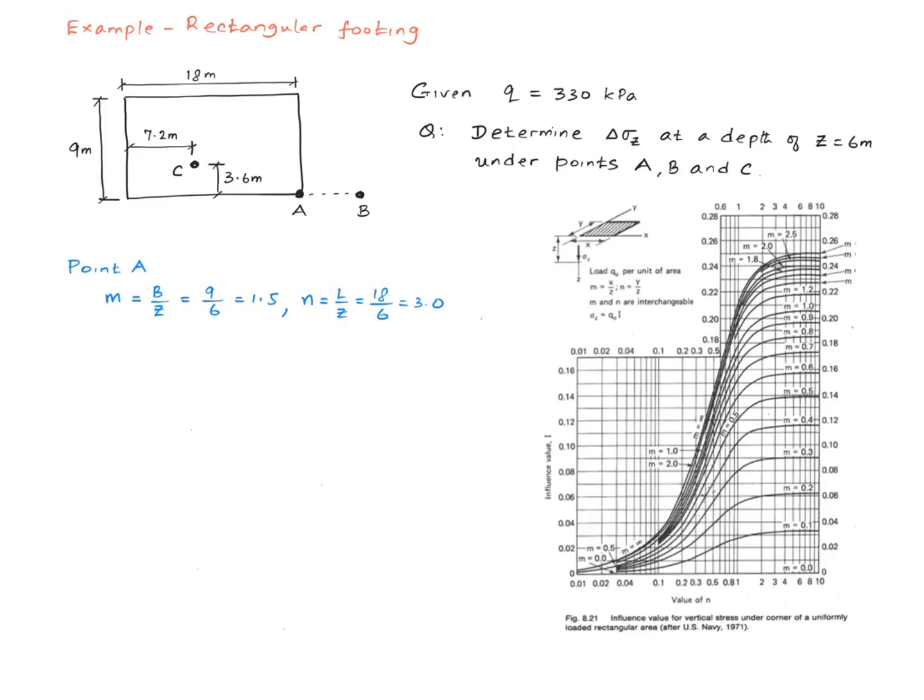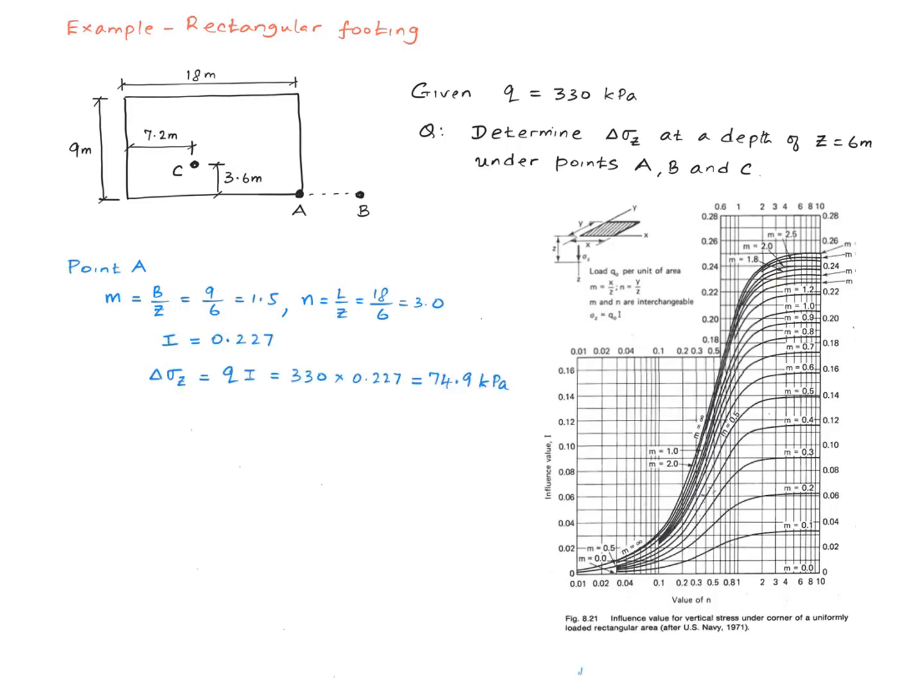So I take the vertical line at 3, go up to the curve that corresponds to 1.5, so I get about 0.227. So delta sigma Z is then calculated to be 74.9 kilopascals.